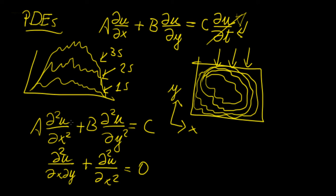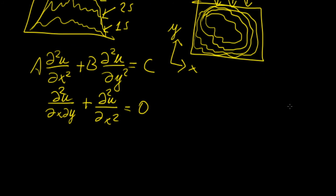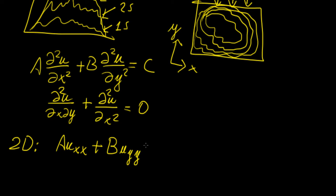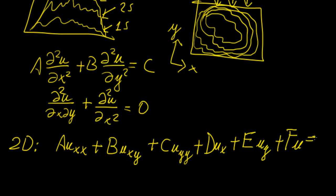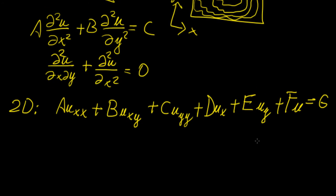There are a lot of different partial differential equations you can come up with, but the main ones we're interested in are second order PDEs. In a general 2D sense, we can write a general linear second order partial differential equation as: A·u_xx + B·u_xy + C·u_yy + D·u_x + E·u_y + F·u = g, where A, B, C, D, E, F are coefficients and g is a forcing function.